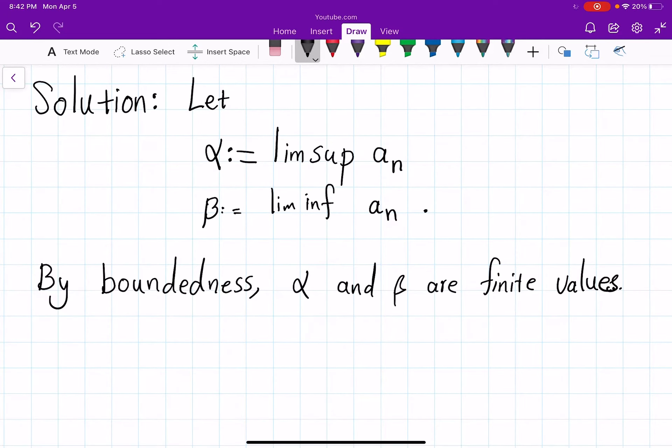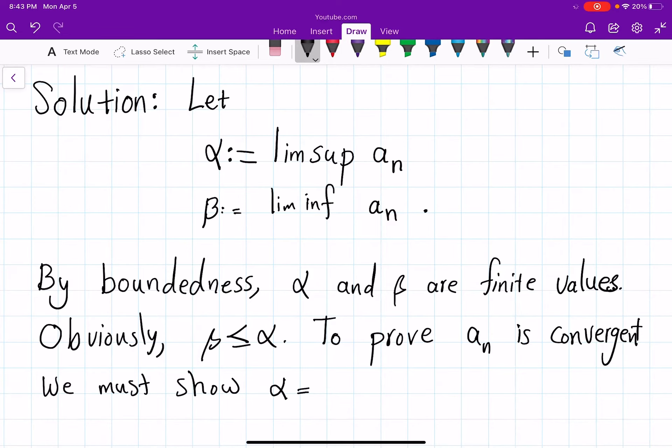We know in general that the liminf is less than or equal to limsup. Obviously, β ≤ α. To prove aₙ is convergent, we must show that indeed α equals β.